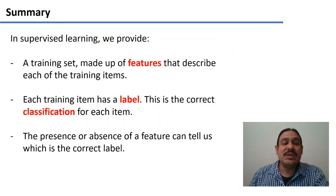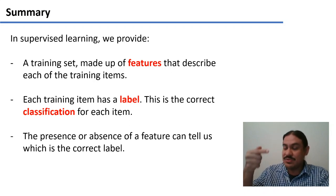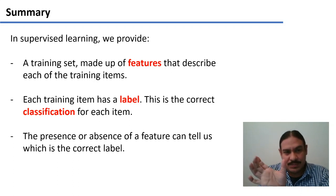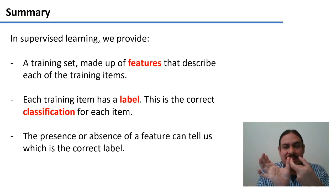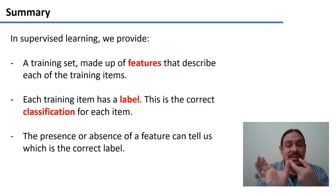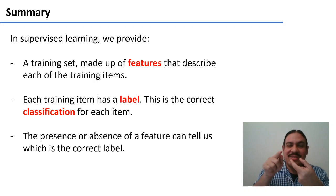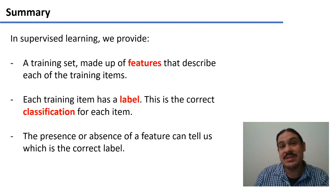In summary, in supervised learning we need to provide a training set — a series of documents that we want to classify — which we ultimately turn into features. These features describe the items in the training set. We also have labels: the classification that we believe to be correct, such as positive or negative, spam or not spam, sports or not sports. The computer will then try to find what it is about the combination of features that tells you it belongs to a given label. This week we're going to look at two methods to do this: Naive Bayes classifiers and support vector machines.